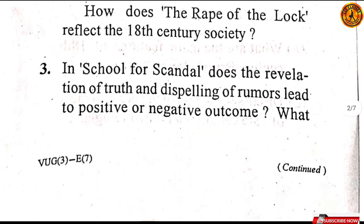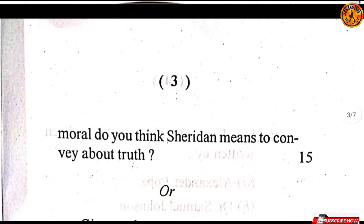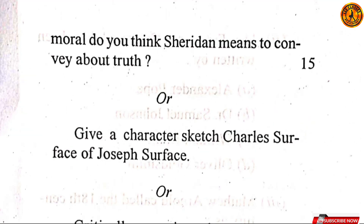Question number three: In School for Scandal, does the revelation of truth and dispelling of rumors lead to a positive or negative outcome? What moral do you think Sheridan means to convey about truth? Yeh maine guess nahi kiya tha. Give a character sketch of Charles Surface or Joseph Surface — yeh aa gaya.